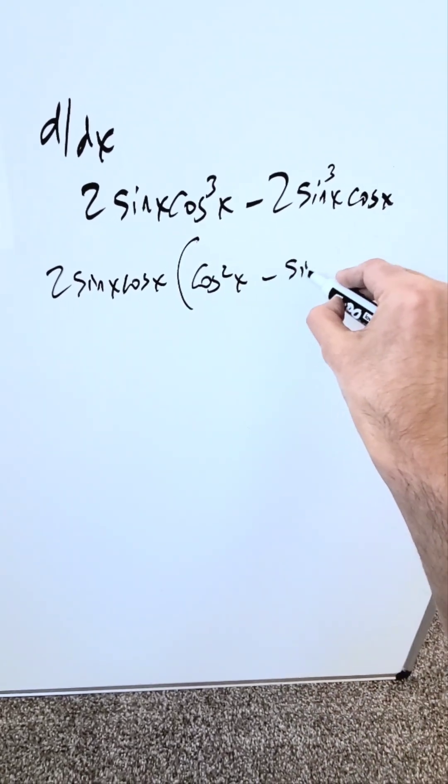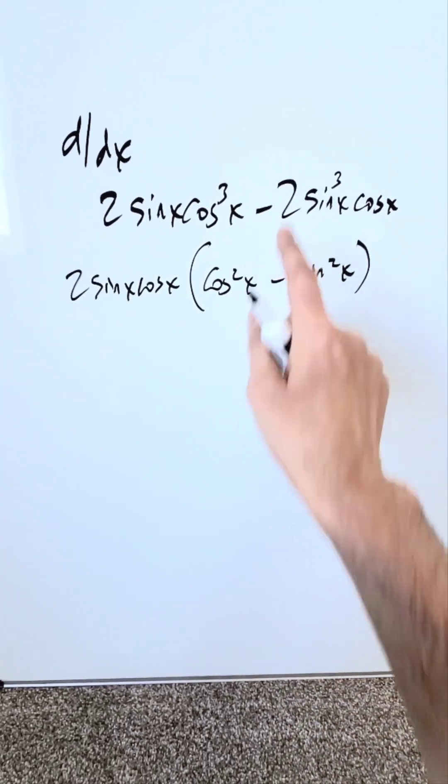Here you'll have a cos²(x). Here you'll have a sin²(x). This is what I have. If you open this up, you'll end up back over here.